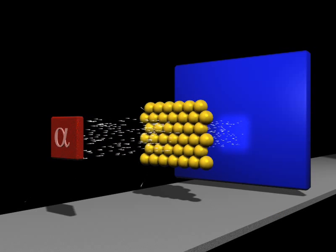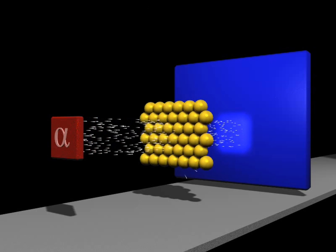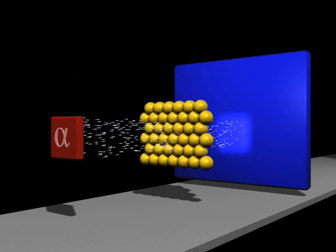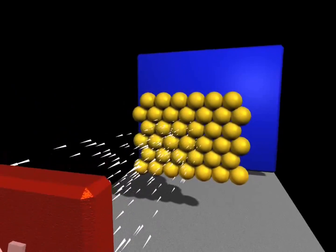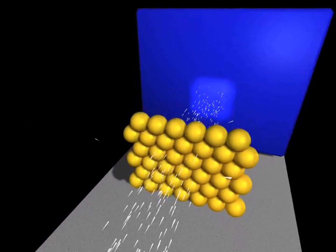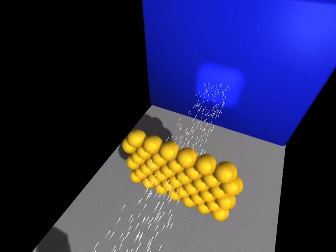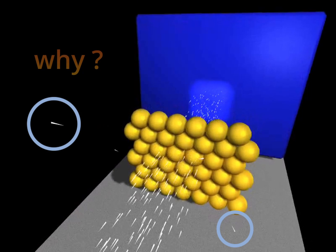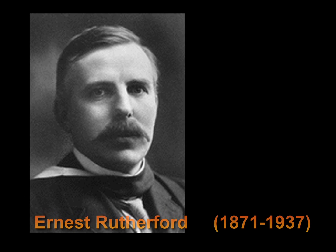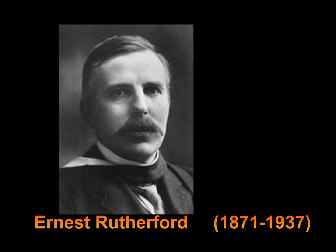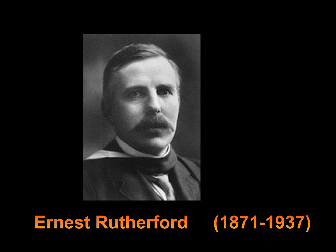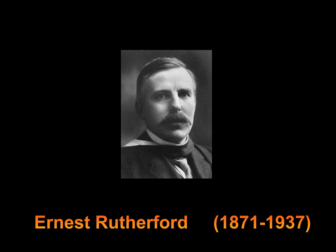However, something surprising happened. The screen was shining, but some of the alpha particles didn't go through the foil. They seemed to deflect from the atoms. Rutherford wrote: it was the most unbelievable event which ever happened to me — nearly as incredible as if you shoot a 15-inch bullet into a sheet of paper and then the bullet deflected backwards and hit you.